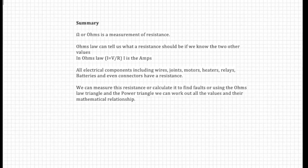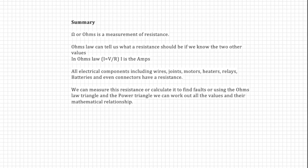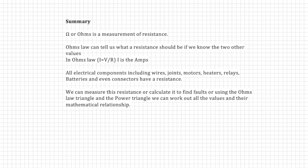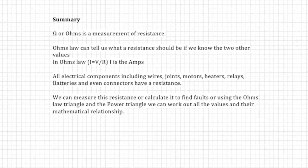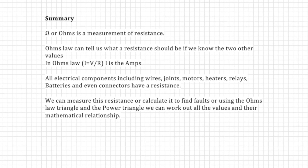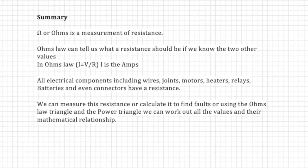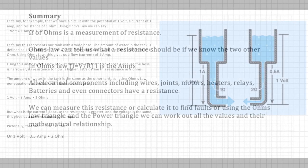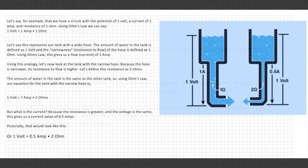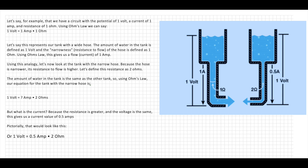Ohm's law can tell us what a resistance should be if we know two of the other values. Ohm's law is I equals V over R, where I is amps. All electrical components including wires, joints, motors, heaters, relays, batteries, and even connectors have a resistance. Ohm's law is fundamental to fault finding.